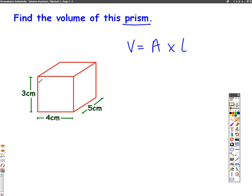If we say that this front face here is the area, then we just need to work that out. So the area is, this is 4 across and 3 up. So it's 4 times 3, which is 12.